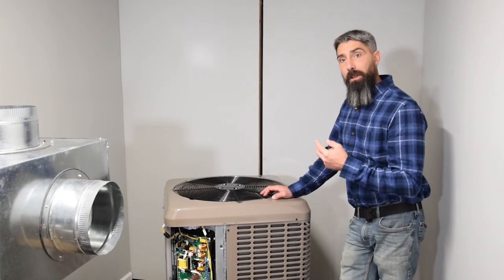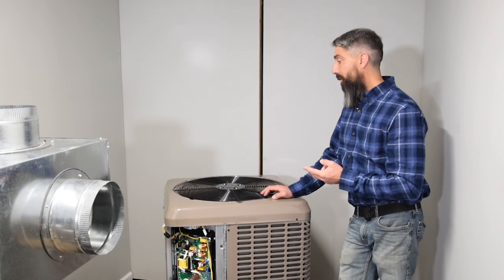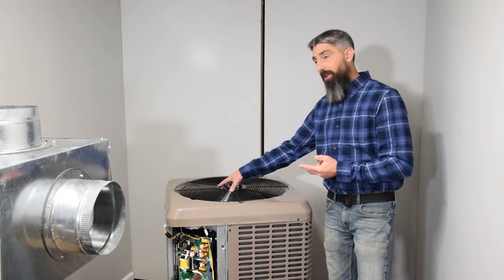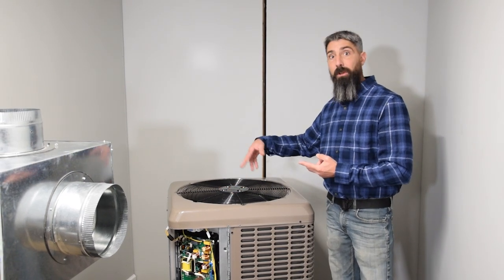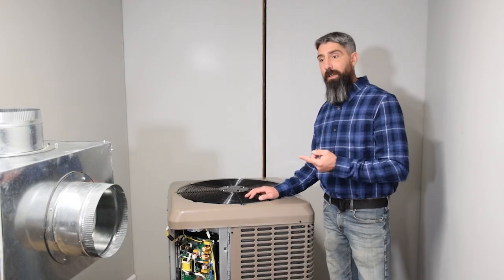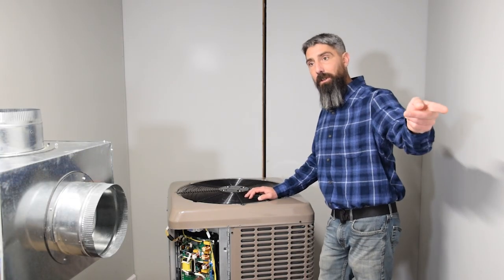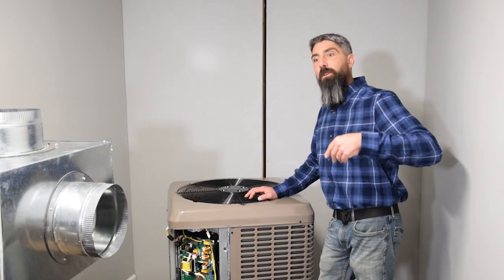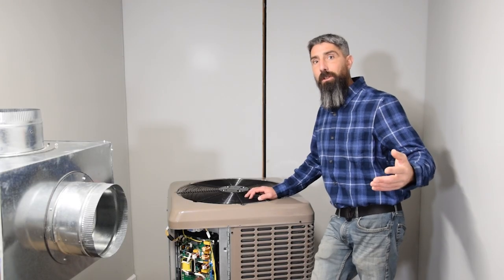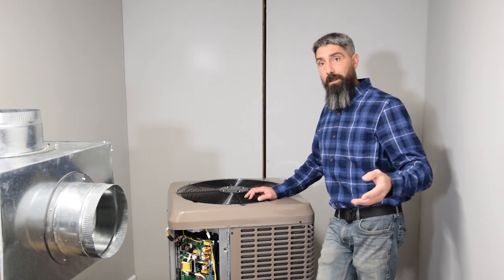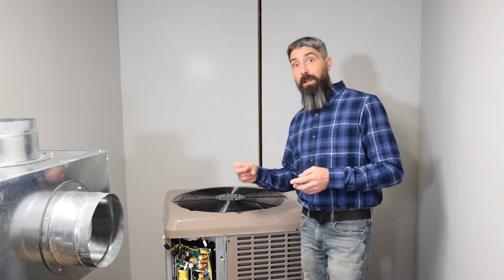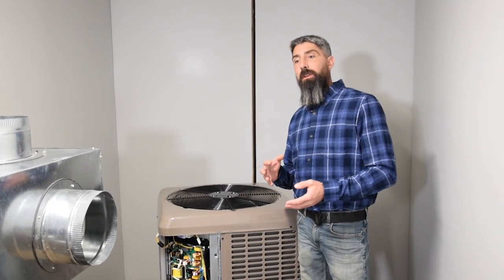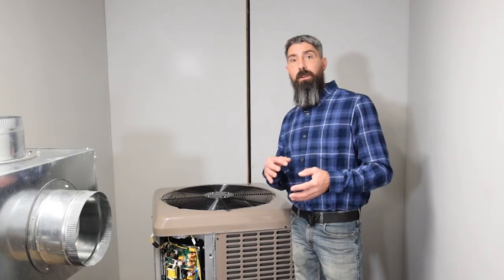Now it does another couple things to speed up that process. One of those things is this outdoor fan is going to shut off. So that outdoor fan, you'll notice that it quits spinning. And the third thing that's going to happen is it's going to send a signal to your indoor unit, your air handler, to bring on the auxiliary heat strips. It does that because it's switching the cooling cycle. So you are going to notice immediately that now you have a not so warm air coming out of your vents.